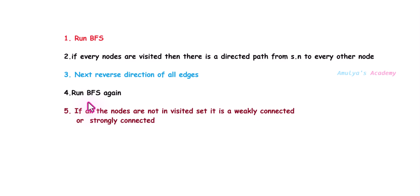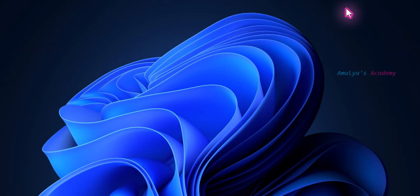To summarize: first run BFS — if every node is visited, there is a directed path from the starting node to every other node. Next, reverse the direction of all the edges in the graph and run BFS again. If all nodes are not visited then that is a weakly connected graph. If all nodes are visited then that is a strongly connected graph. Let's write the program.